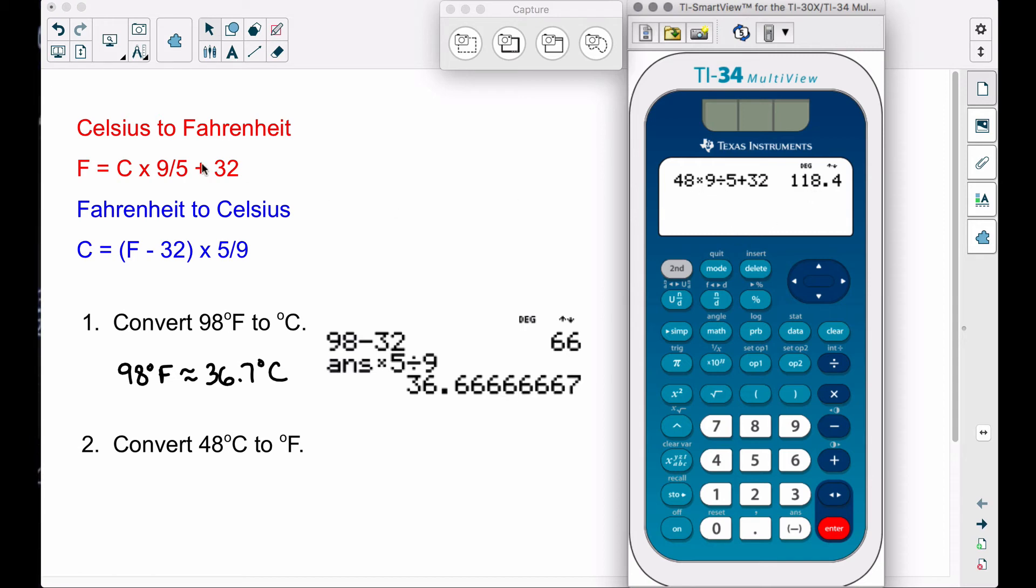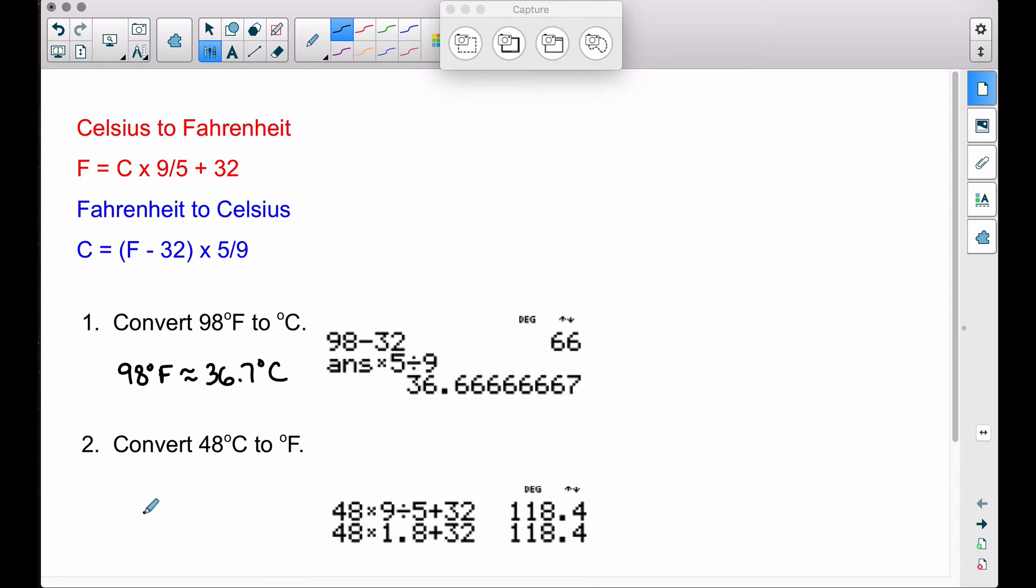I did mention we can use 1.8 instead of 9/5 here. So let's look at that: 48 times 1.8, and then plus 32. We get the same answer as well. So 48 degrees Celsius is actually exactly 118.4 degrees Fahrenheit.